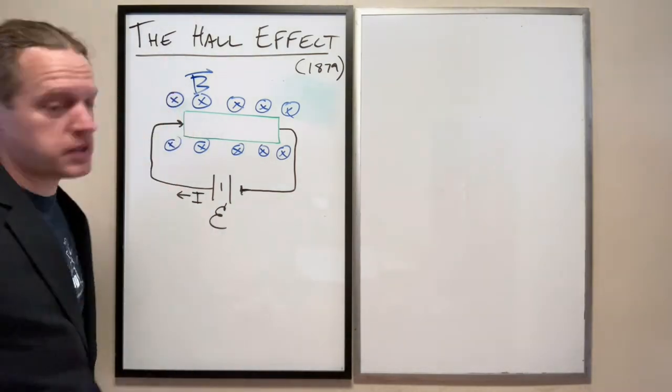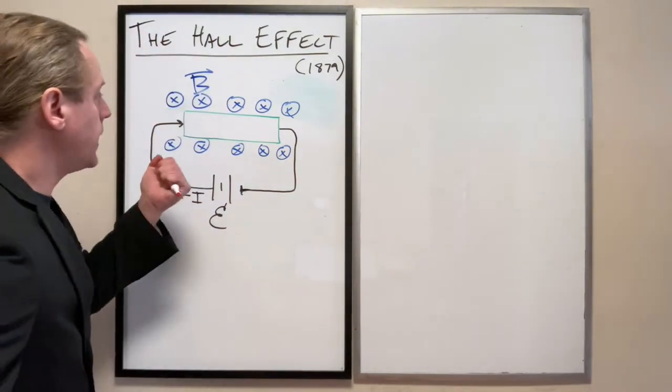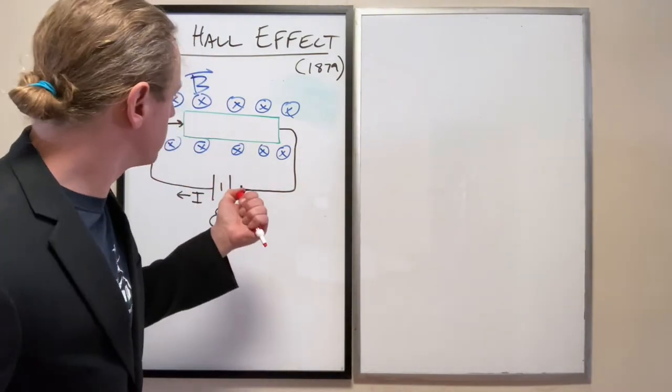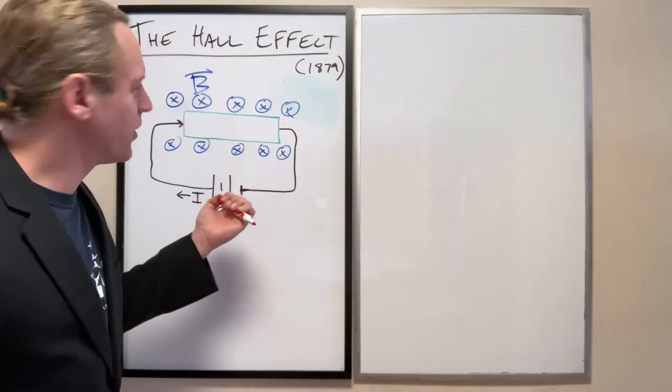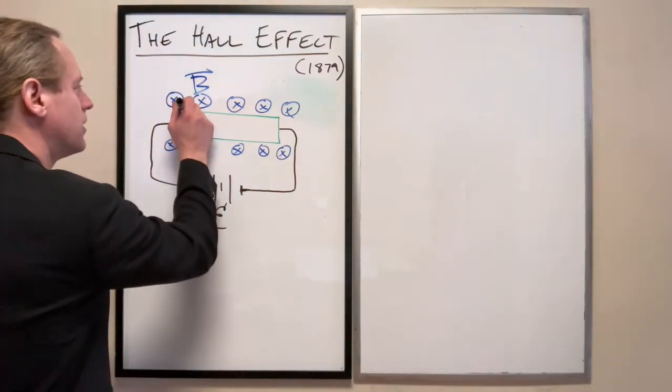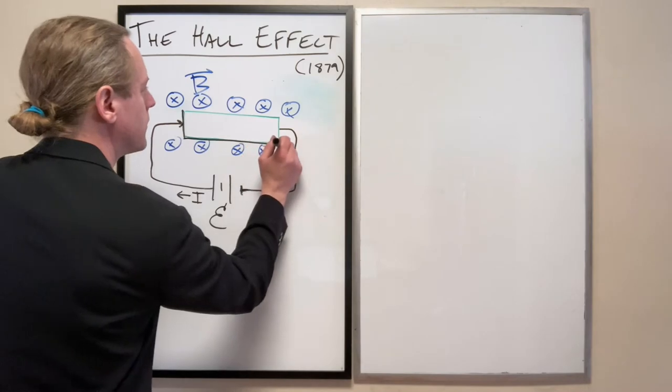So there's a magnetic field that points into the board and now we can make two different predictions. I'm going to do them in red and in green. Let's redraw this.